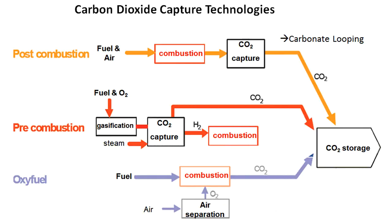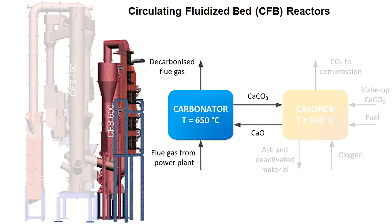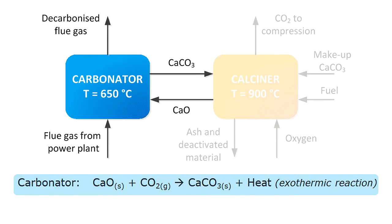Carbonate looping is in the field of post-combustion technology. The process consists of two units — two circulating fluidized bed reactors. In blue, the carbonator is shown. Flue gas from a power plant, cement plant, or any other combustion unit is directed into the carbonator at the bottom. The temperature of the entering flue gas can be any value — ambient or several hundred degrees — because when CO2 reacts with calcium oxide, there is a highly exothermal reaction: calcium oxide plus CO2 forms calcium carbonate, releasing heat.